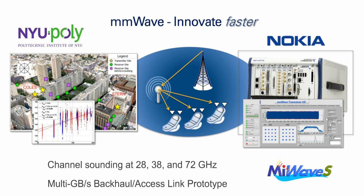Millimeter wave involves the use of frequencies far higher than we have ever considered for normal communication systems. Normal systems tend to operate in the sub-6 GHz band — from roughly zero up to about 6 GHz. Within that range you have FM radio at tens to a hundred megahertz, AM radio in a similar space, then GSM (2G mobile) operating from roughly 850 MHz up to about 1 GHz.